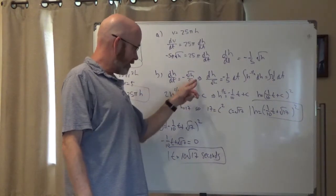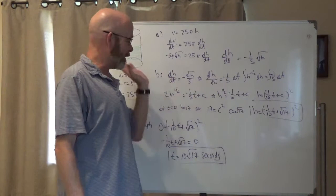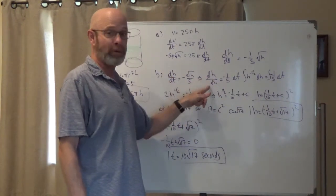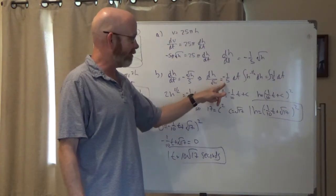h's go with the h's, t's go with the constant. You can put the constant wherever you want, but you might as well put them over there, because you're going to solve for h anyway. So I divided this over here, so I got dh over root h equals negative one-fifth dt.